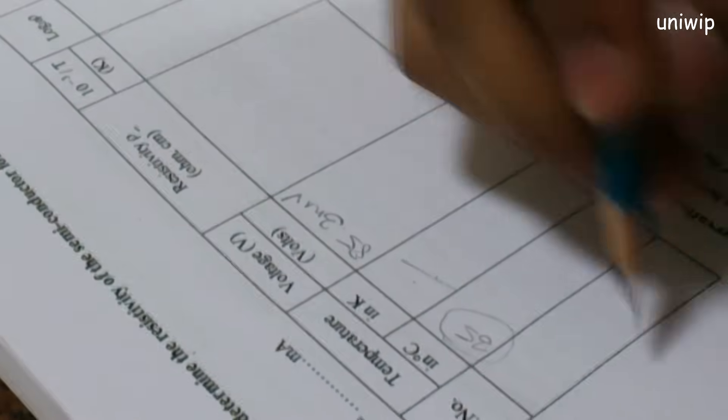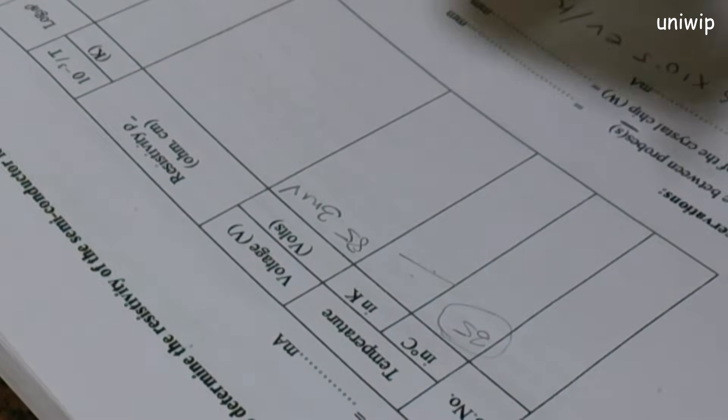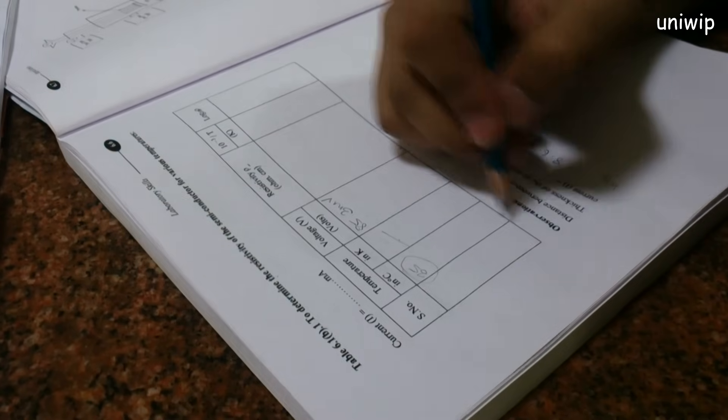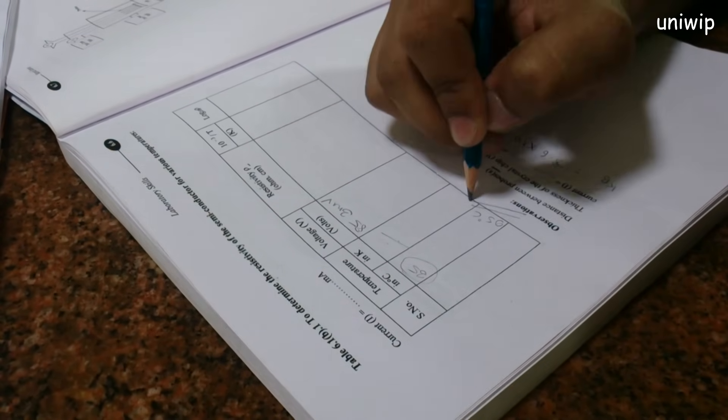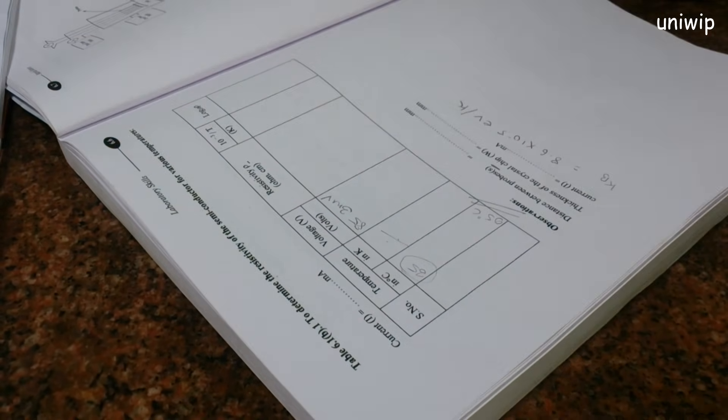Now what I want you to do, you're gonna take a reading for at least seven different variables from now, till you reach the temperature of 95 degrees Celsius. When you reach 95 degrees Celsius, that's your final reading that you should be taking. Let me show you a sample.